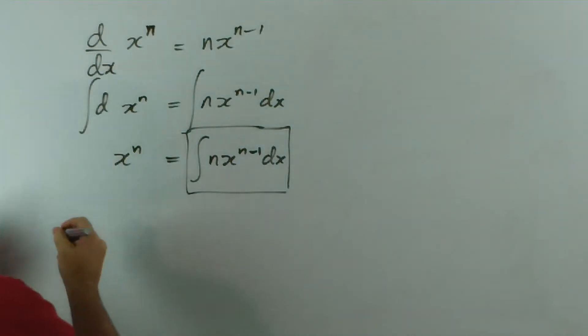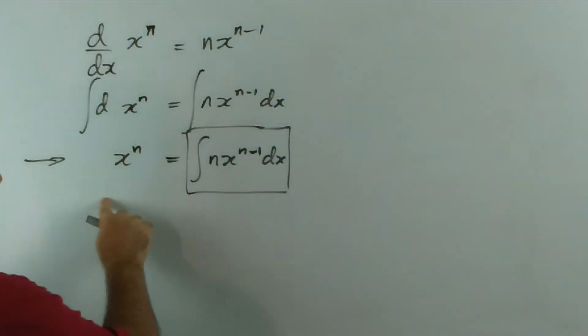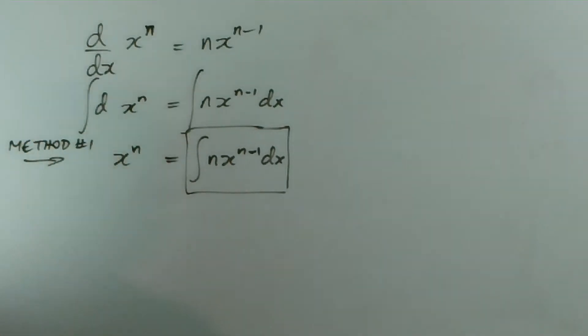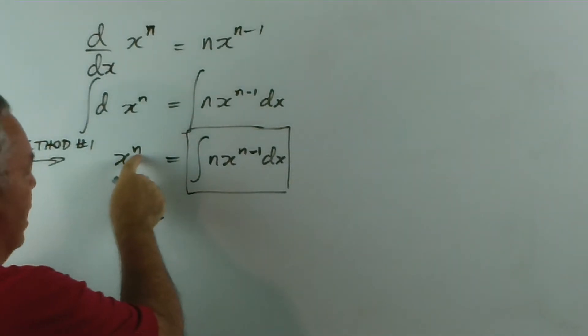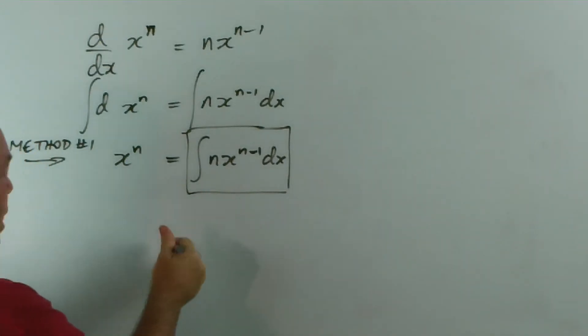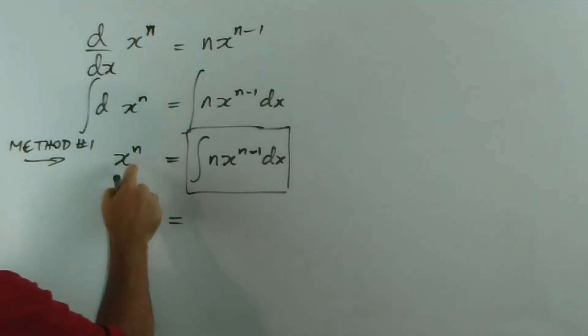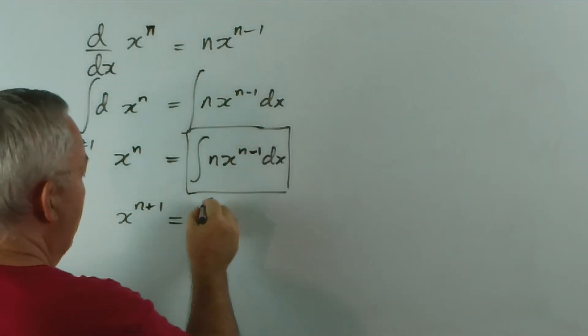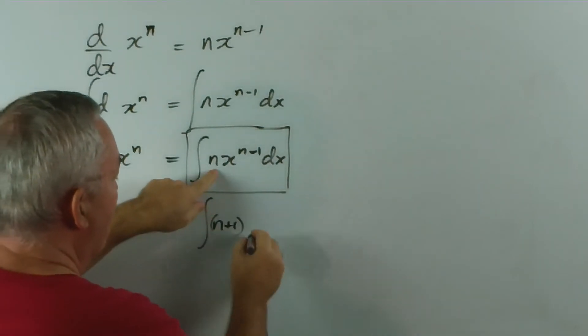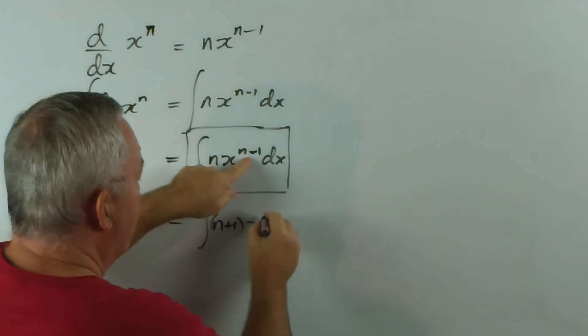Now, for the second method, we take one step further. Using this basic pattern—I'll call this method one, or I could call it pattern number one—what we're going to do is make the constants one larger. So I'm going to add one to each of the constants. So here, if I add one, I get that. Here, if I add one, I get n plus one, in place of that. And here, if I add one to this, I get n.